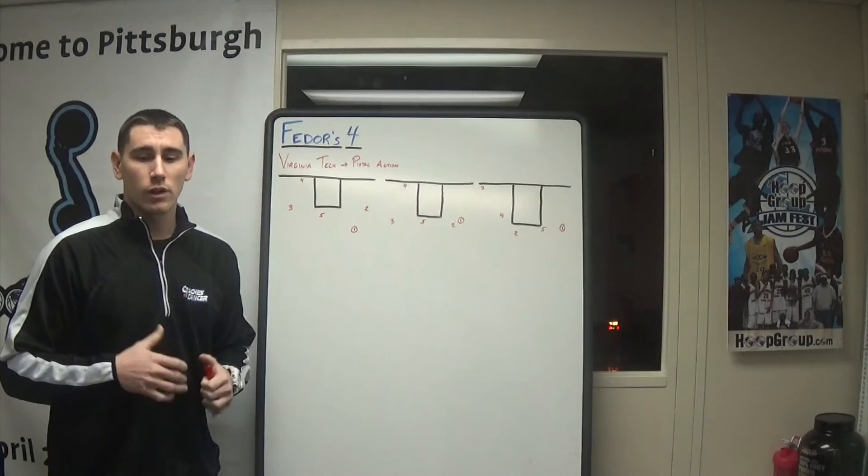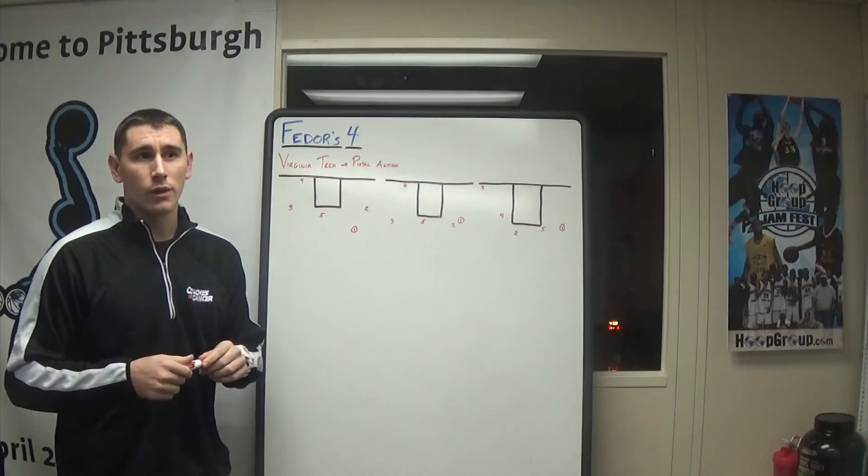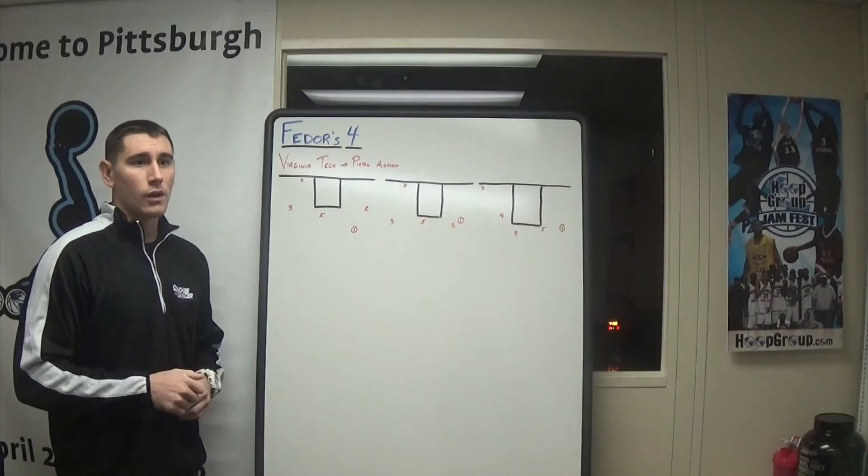Hey guys, how's it going? Welcome back to week 3 of Feed Ours 4. I have a couple different things, some special situations this week. First thing we'll do is a Virginia Tech set that I really like, and then we'll get into some baseline out of bounds, sideline out of bounds, and even a set versus zone. So let's get started here with Virginia Tech.